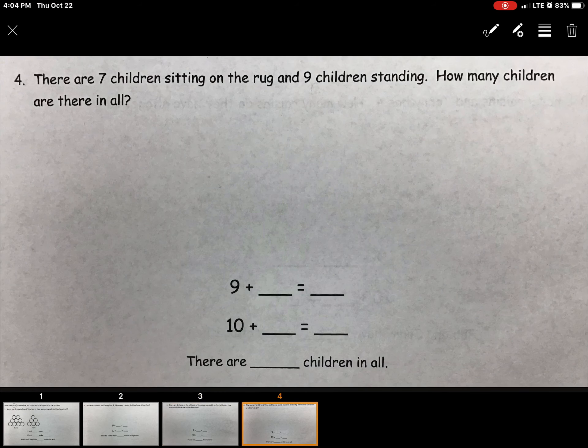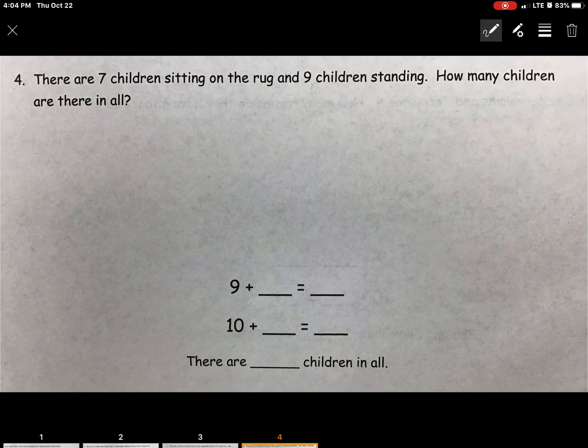All right. And for our last question, number four, it says there are seven children sitting on the rug and nine children standing. How many children are there in all? Again, we're going to find those math facts and we're going to draw what we read. There are seven children sitting on the rug. Our math fact is seven. We're going to draw what we read, which is 1, 2, 3, 4, 5, 6, 7.